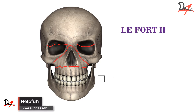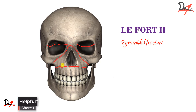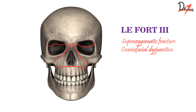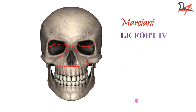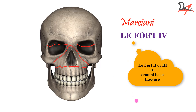LeFort 2 is called the pyramidal fracture because if you look at the shape of the fracture, it looks like a pyramid. LeFort 3 is also called the suprazygomatic fracture because it is above the zygomatic bone, and also craniofacial disjunction, because the cranium and the face are disjoined. This classification was modified in 1993 by Marciani, who introduced LeFort 4, in which we have a LeFort 2 or 3 fracture with an additional cranial base fracture. LeFort 4 is further subclassified into 4a, 4b, and 4c, which we can learn later.